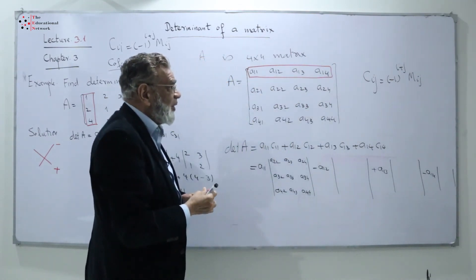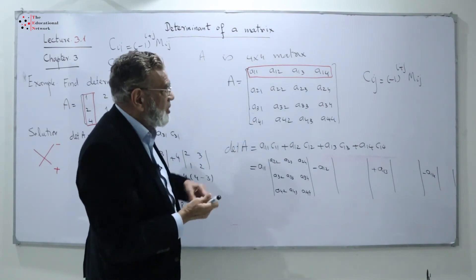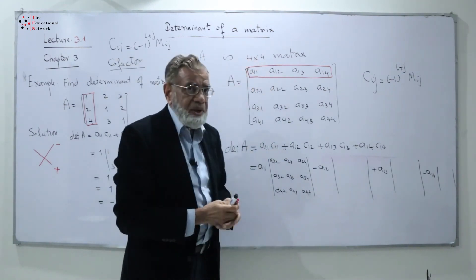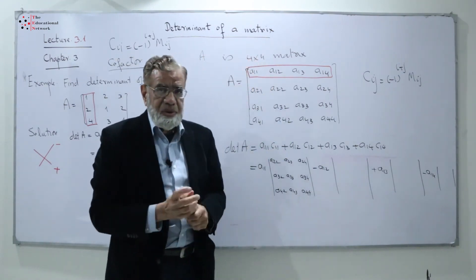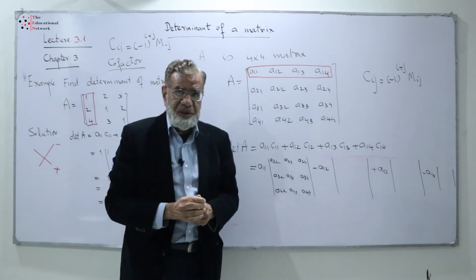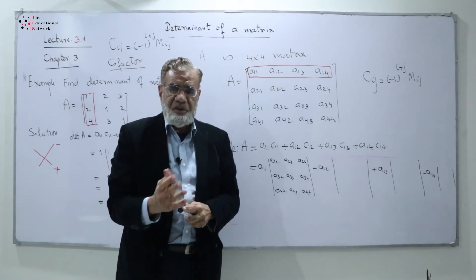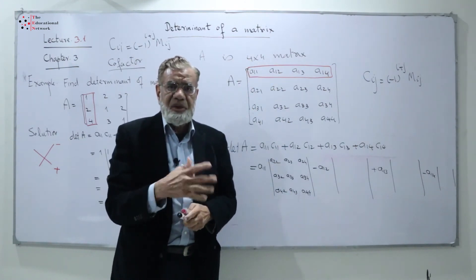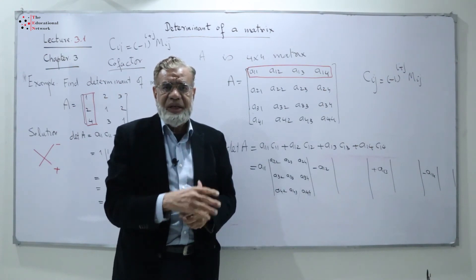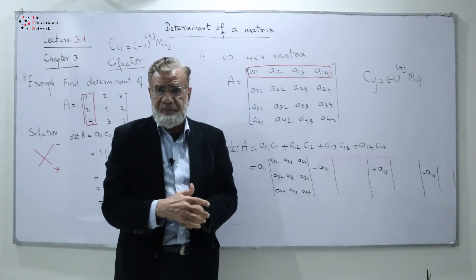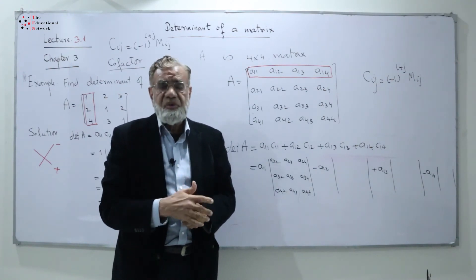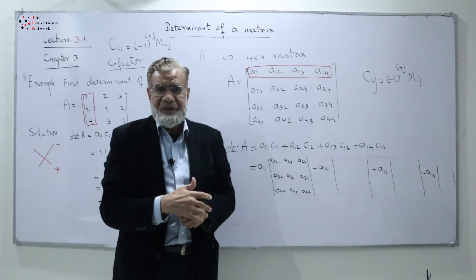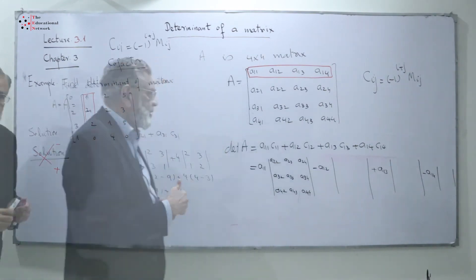As I told you, we can take any row or any column. The strategy is to search for the row or column that contains the maximum number of zeros, because multiplying by zero gives zero and we don't need to evaluate all those 3x3 determinants. This makes solving a 4x4 much easier.